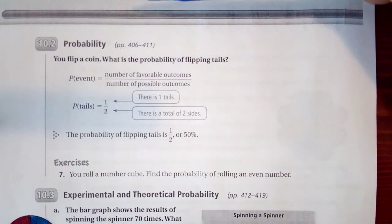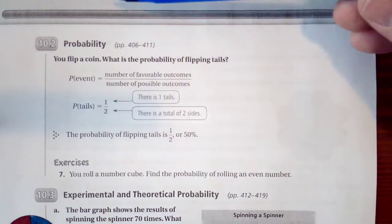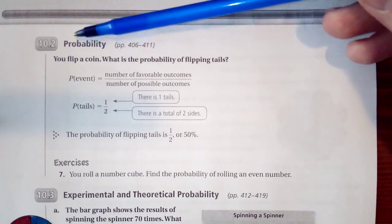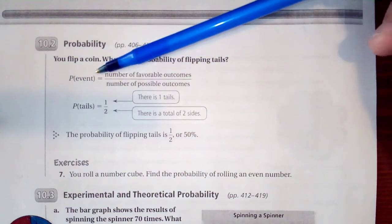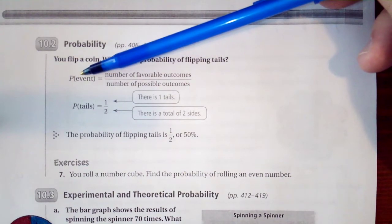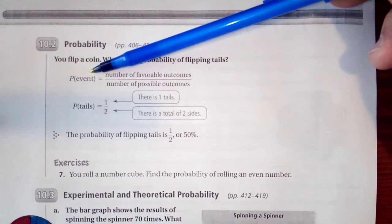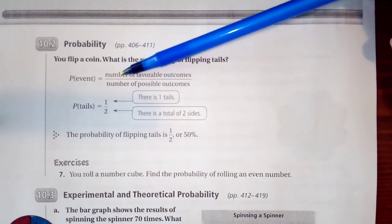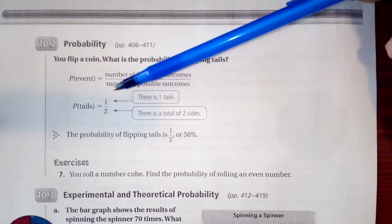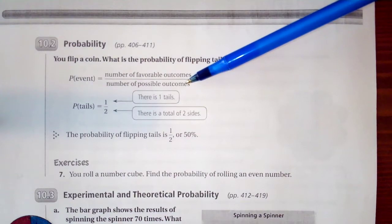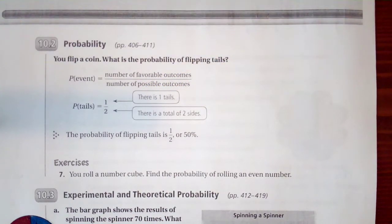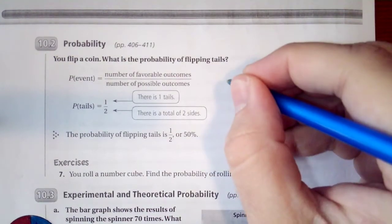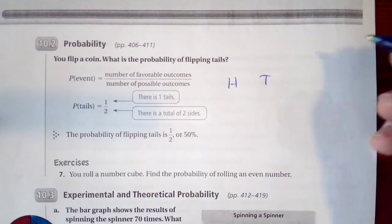We talked about favorable outcomes last time. So, probability. You flip a coin. What is the probability of flipping tails? We're looking at the probability of this event occurring. Number of favorable outcomes over number of possible outcomes. When you're looking at a coin, you have two outcomes: a head or a tail.